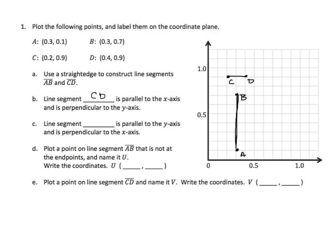Next: line segment blank is parallel to the y-axis and perpendicular to the x-axis. If I look at AB, I can see that AB is perpendicular to the y-axis, and if I continued this and made it a line, AB would intersect the x-axis at a right angle. So the answer is AB is parallel to the y-axis.